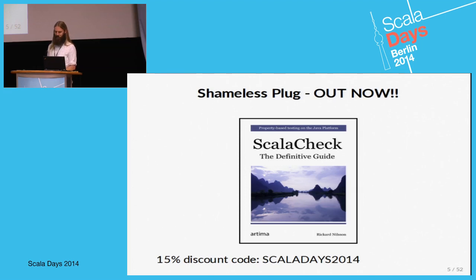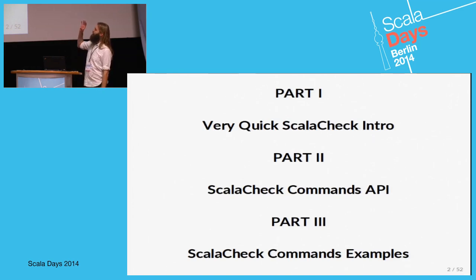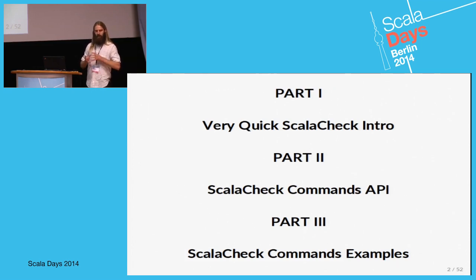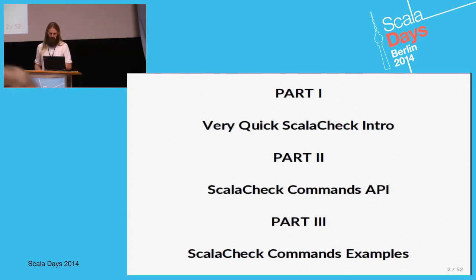So first we had the intro, and now we will get to a presentation of a new API that I have implemented on top of ScalaCheck. It lets you test stateful systems but still do it in a property-based fashion. The ending part will present two examples that are a bit more real-world than what you will see in part two.